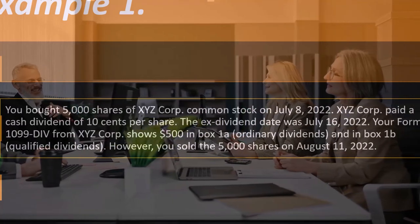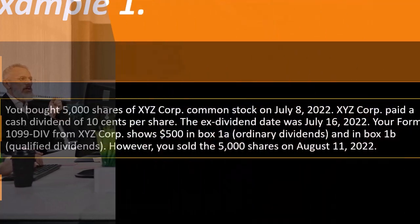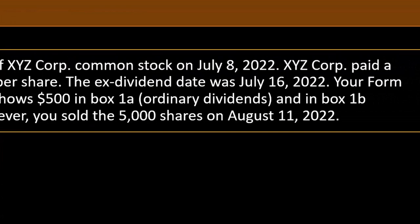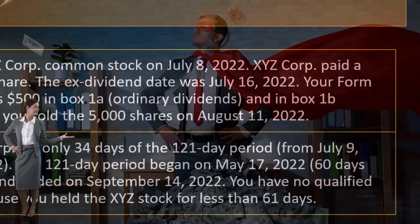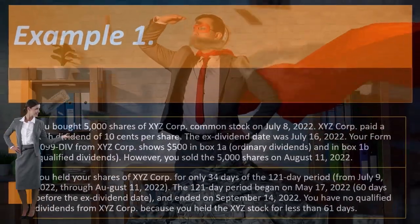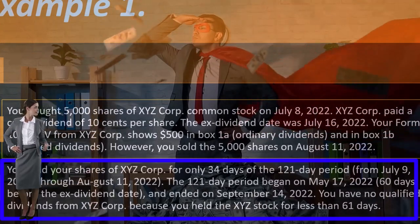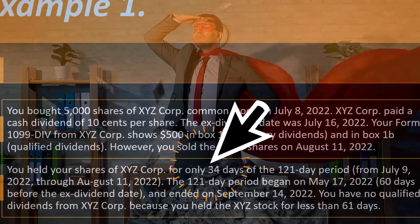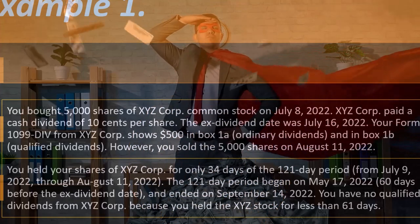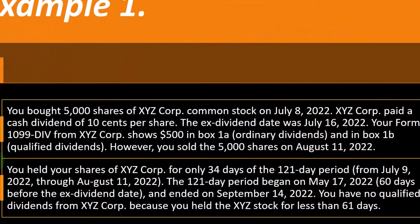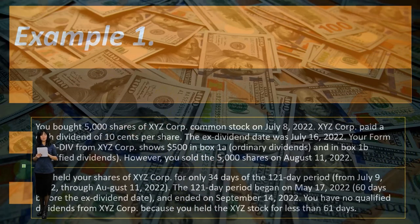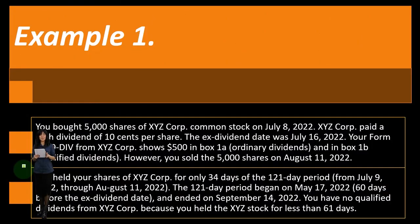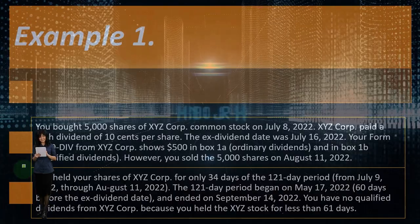The ex-dividend date was July 16th, 2022. Your Form 1099-DIV from XYZ Corporation shows $500 in box 1A ordinary dividends and $500 in box 1B qualified dividends. However, you sold 5,000 shares on August 11th, 2022. You held your shares of XYZ Corporation for only 34 days — only 34 days of the 121-day period from July 9th through August 11th, 2022. The 121-day period began on May 17th, 2022, 60 days before the ex-dividend date, and ended on September 14th, 2022. You have no qualified dividends from XYZ Corporation because you held the XYZ stock for less than 61 days.